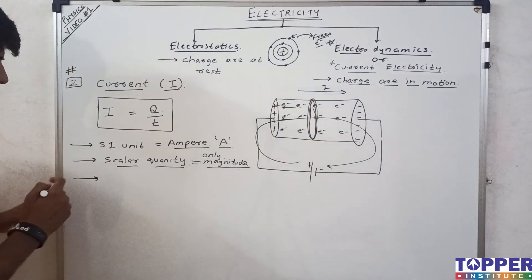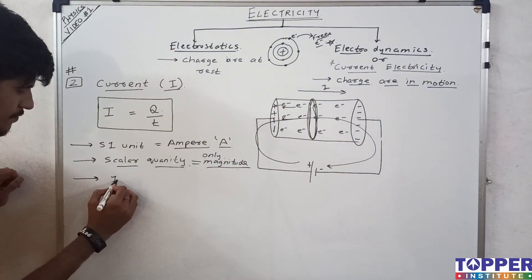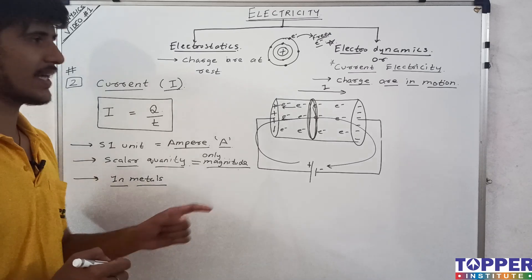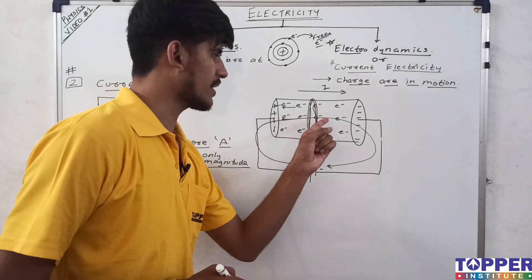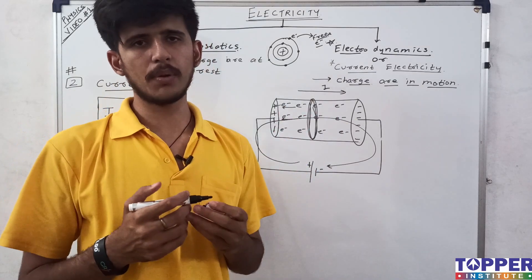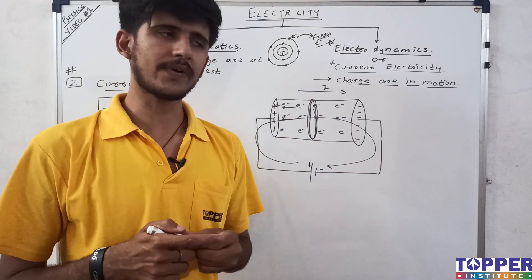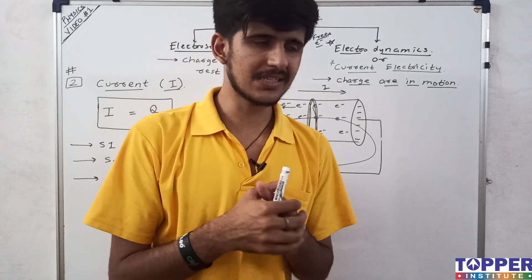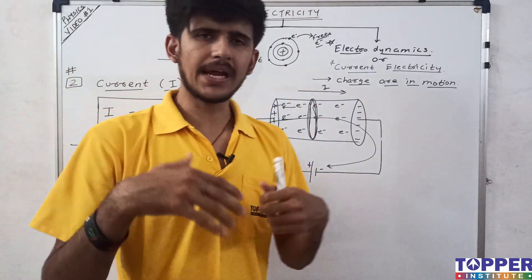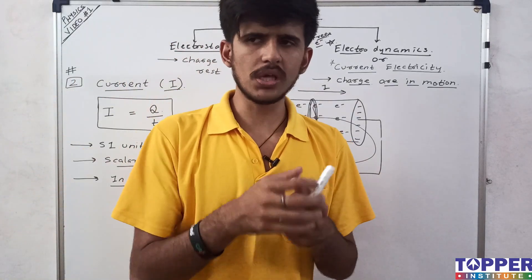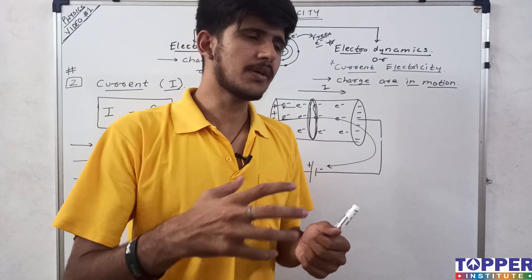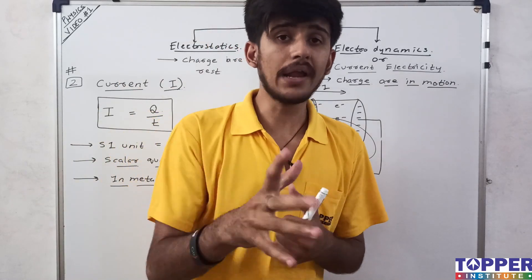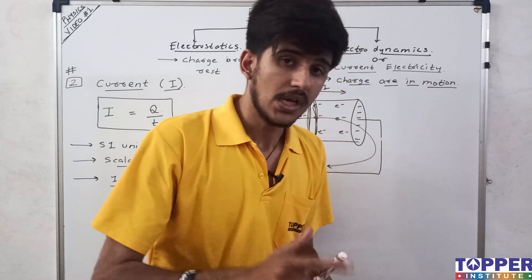In metals, only electrons are responsible for the flow of current, because in metals and semiconductors only free electrons can move.